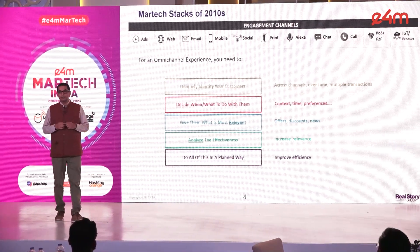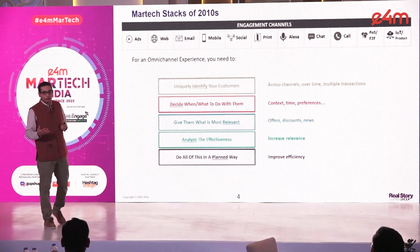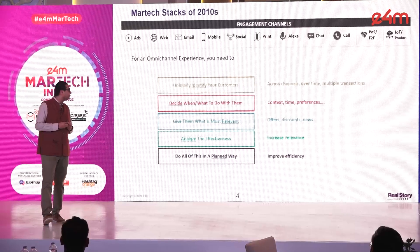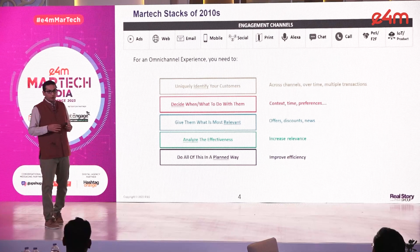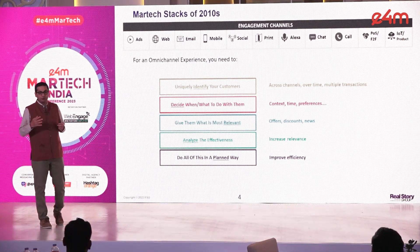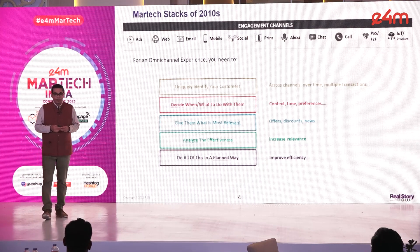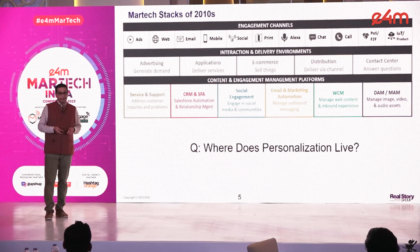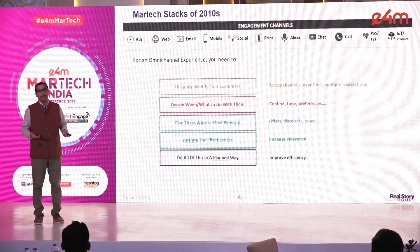Once you've identified your unique customers and decided what you want to do, you actually do it — that may include sending them an offer, a discount, or news relevant to them. You also want to analyze this to increase the effectiveness of future campaigns, and you want to do all of this in a very planned way. However, in a lot of cases, especially in our country, the omnichannel customer experience is really broken.